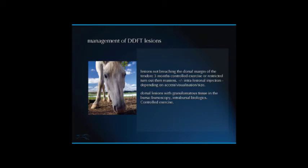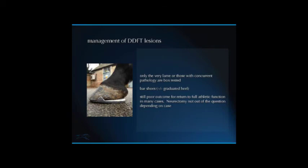How do we manage them? Lots of people probably manage these similarly or differently, and no one really knows the best way forward. If the lesions don't reach the dorsal margin — so none of the fibrillation I've shown you — they get three months of controlled exercise or restricted turnout, depending on how lame they are, plus or minus an injection, depending on whether we can visualise them. Dorsal lesions with granulomatous tissue associated with them usually get bursoscopy or intra-bursal biological agents and controlled exercise. Very few horses get box rested — only the very, very lame ones. I usually put them in a bar shoe with a graduated heel of only up to five millimetres if I'm going to box rest them, but not if they're going into a large paddock or back into exercise.